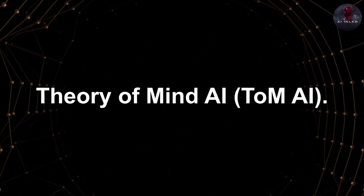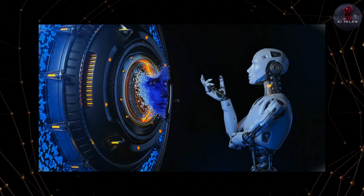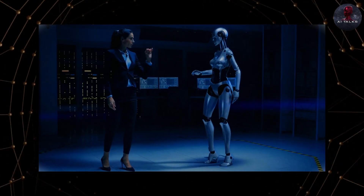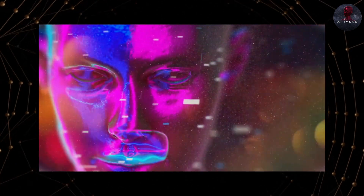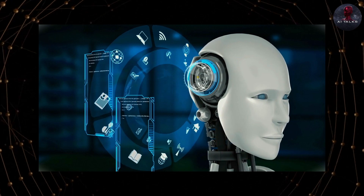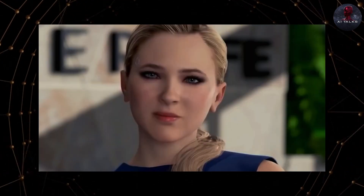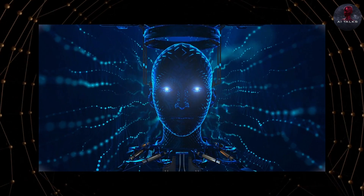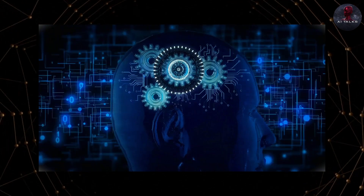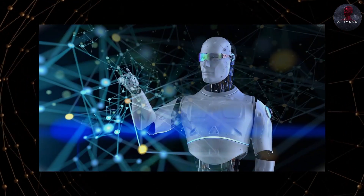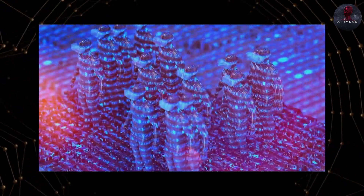One of the most interesting types is Theory of Mind AI, TOMAI. TOMAI represents a hypothetical and highly advanced level of artificial intelligence capable of understanding and simulating the mental states of other entities, including humans. This concept draws inspiration from psychology and cognitive science, where Theory of Mind refers to the ability of humans to attribute thoughts, beliefs, desires, and intentions to themselves and others, allowing them to understand and predict the behavior of others. TOMAI is a technology that can understand and interpret individuals' mental states, including thoughts, emotions, beliefs, desires, and intentions. It can exhibit empathy by recognizing and responding to human emotions and adapting its behavior accordingly. TOMAI can also predict individuals' behavior by simulating how thoughts and emotions influence their actions.